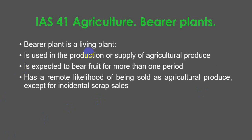What are bearer plants? A bearer plant is a living plant which is used in the production or supply of agricultural produce, is expected to bear fruit for more than one period, and has a remote likelihood of being sold as agricultural produce, except for incidental scrap sales. An example of a bearer plant is an apple tree.